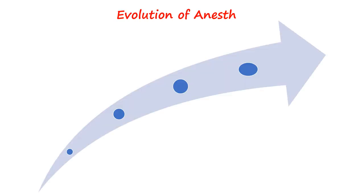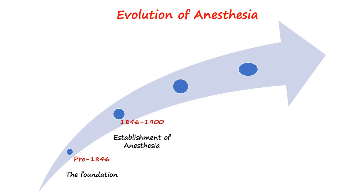The evolution of anesthesia can be better understood using a timeline of events that occurred in the past. Broadly we could put it into different phases: the Foundation, which was before 1846, where advancement in anatomy and surgery demanded the need for better anesthesia; Establishment, between 1800 and 1900, where development in chemistry resulted in discovery of general anesthetics; Growth, during which modern anesthesia developed with improved safety; and Present, which we can call a digital era.